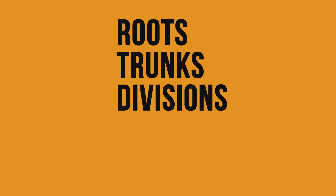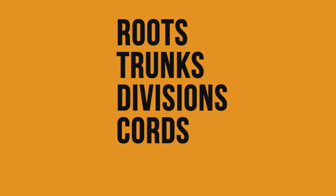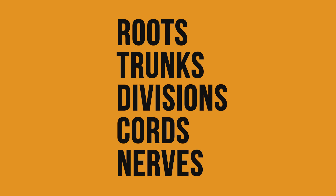We've now seen that the brachial plexus is divided into five main regions: the roots, trunks, divisions, cords, and finally the nerves.